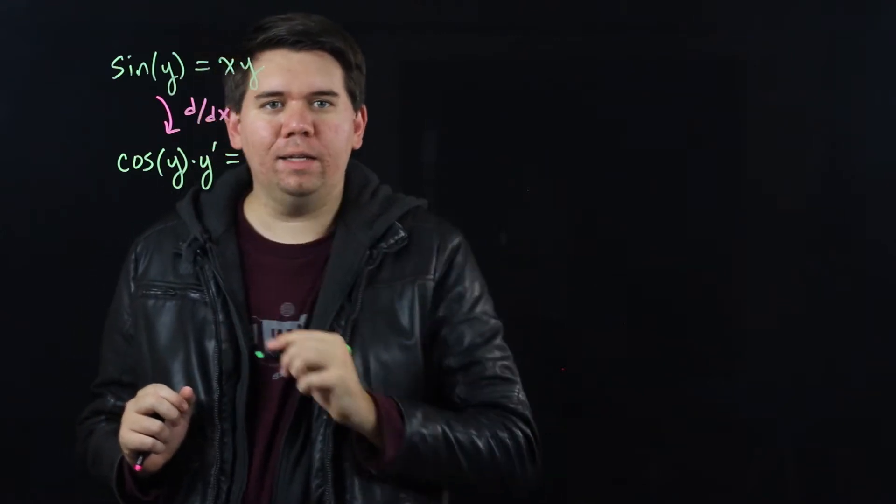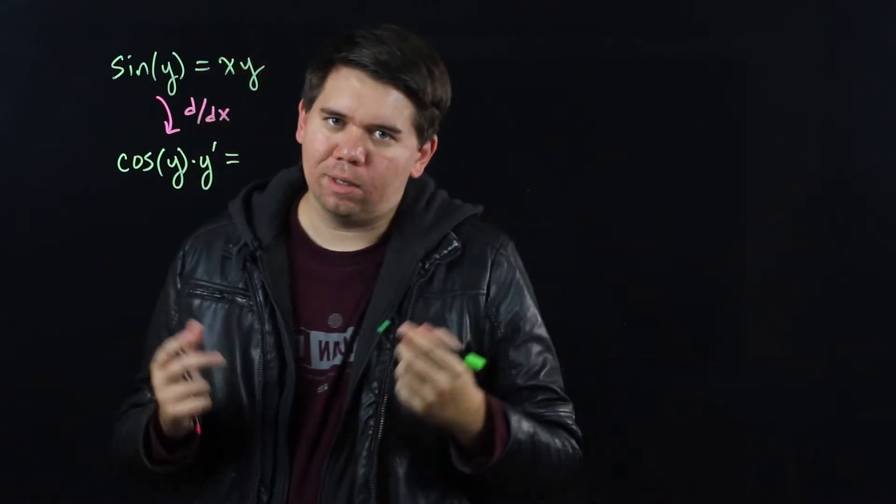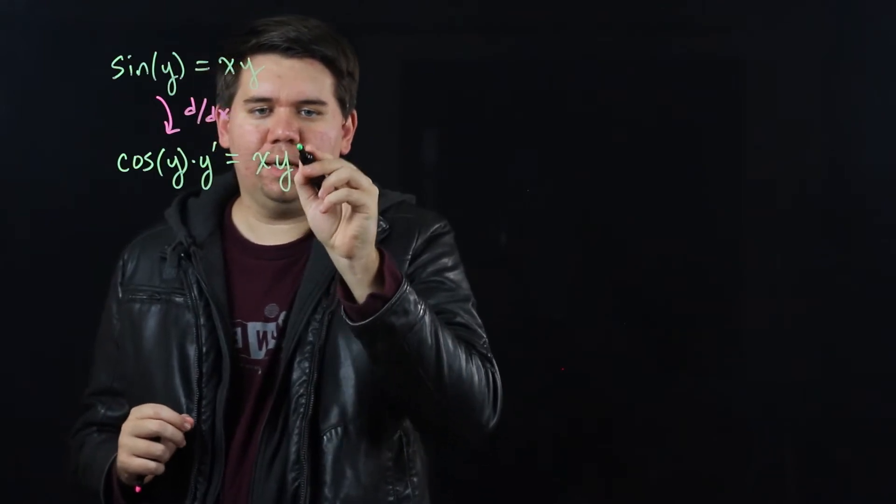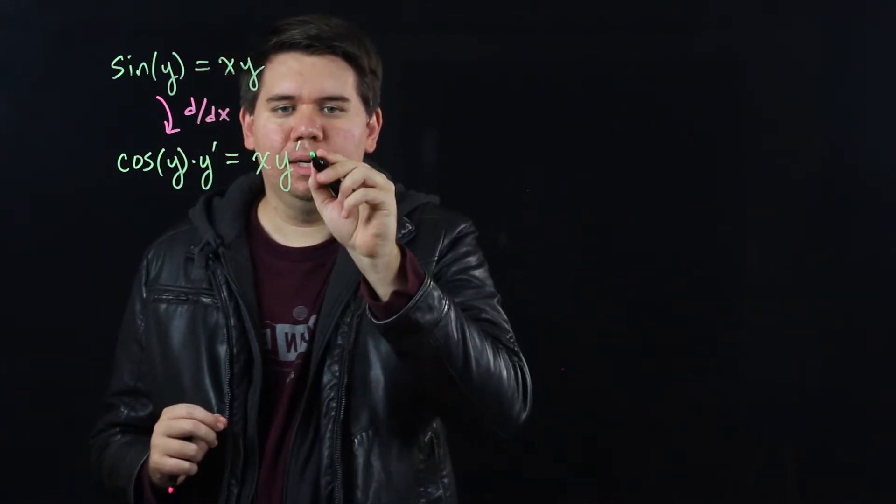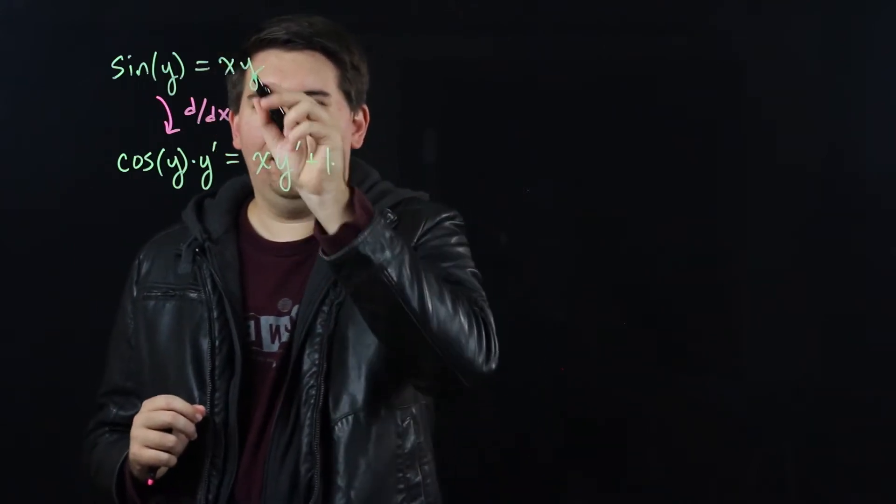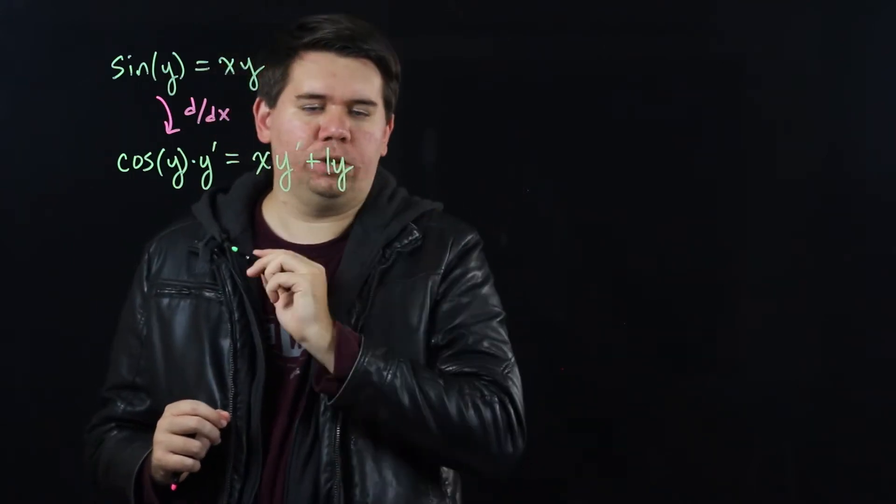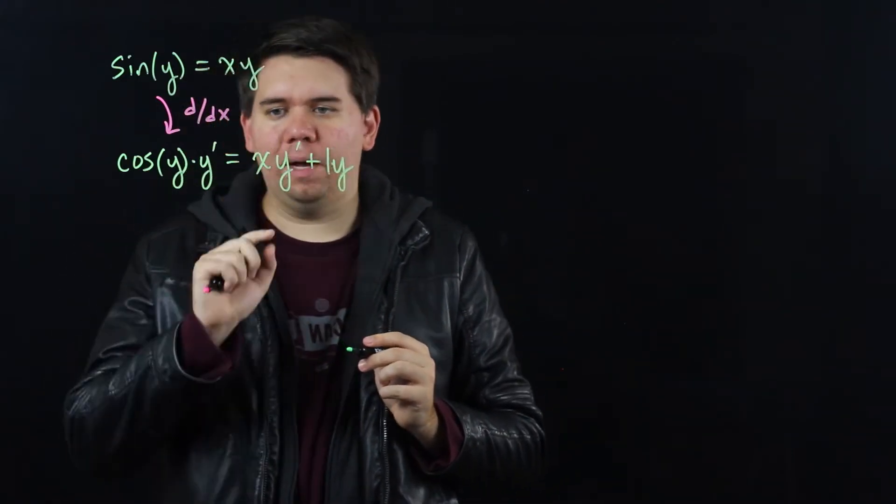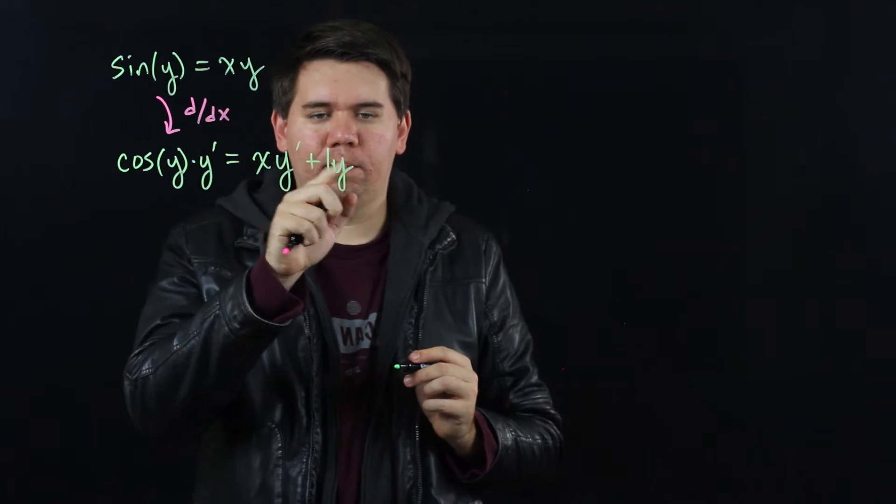Now for the right hand side we have a product, so let's use the product rule. Hold the first, take the derivative of the second. Derivative of y becomes y prime, plus take the derivative of x which is one, times leave the second one the same which is just y. And so we get cosine of y times y prime equals xy prime plus y.